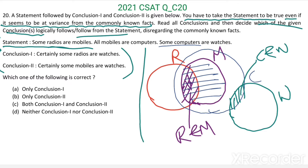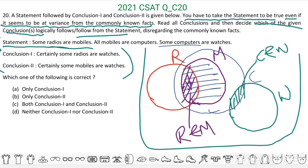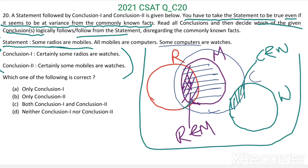This is the Venn diagram for the given statement. Now see the first conclusion: certainly some radios are watches. From this figure, no radios are watches — the circle for radios and the circle for watches do not overlap. Therefore, conclusion one is not following. Certainly some radios are watches is wrong, this is false.